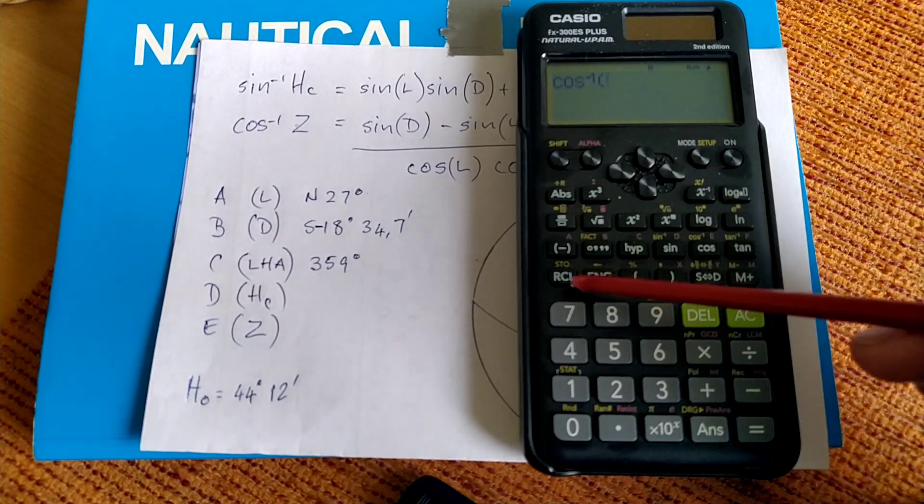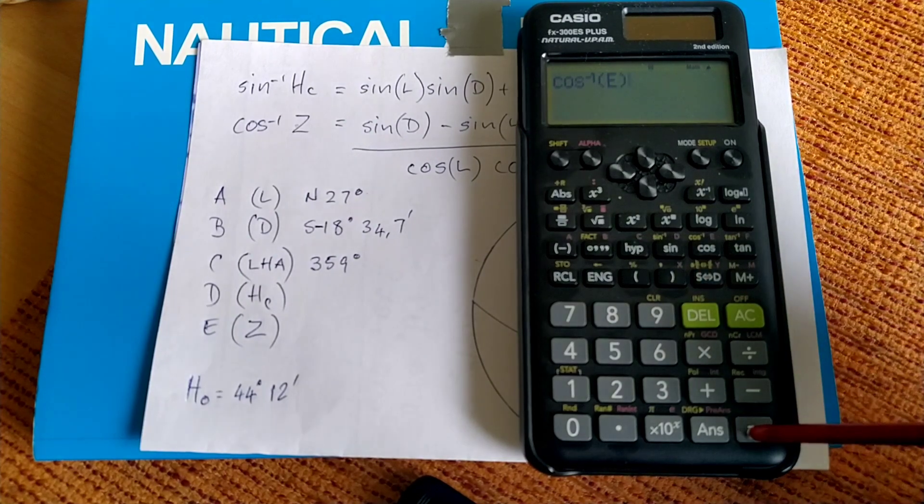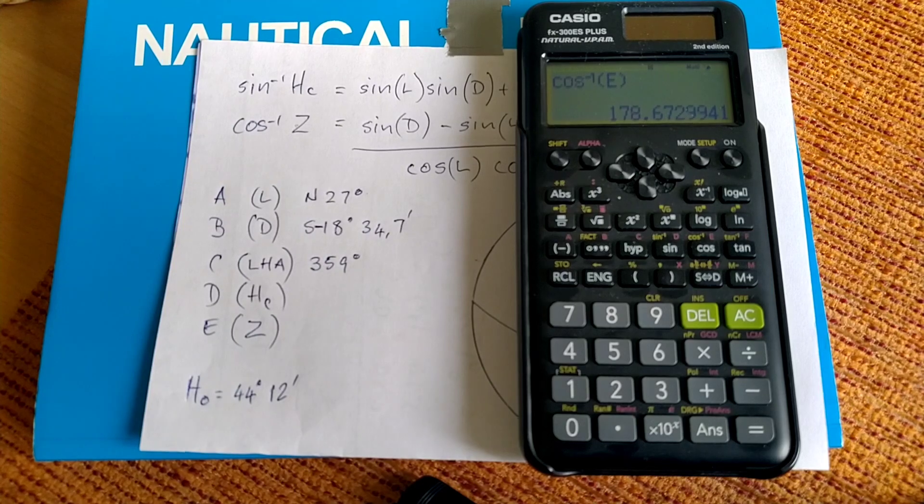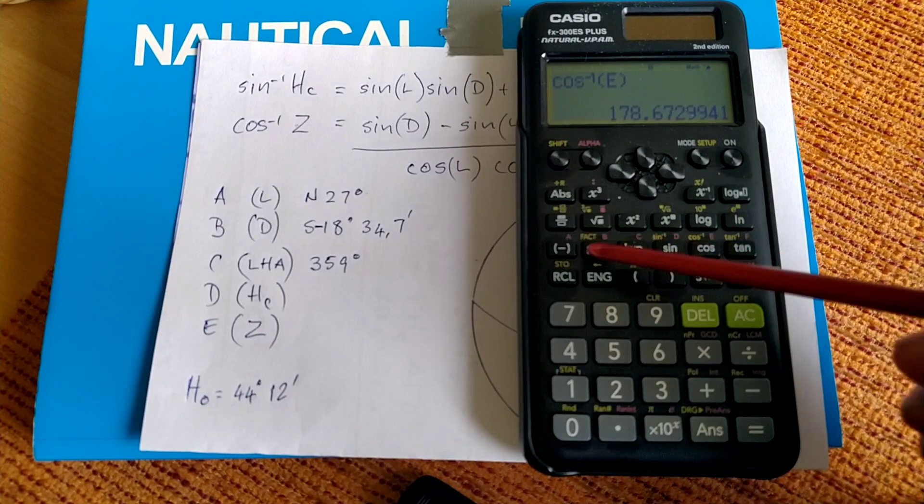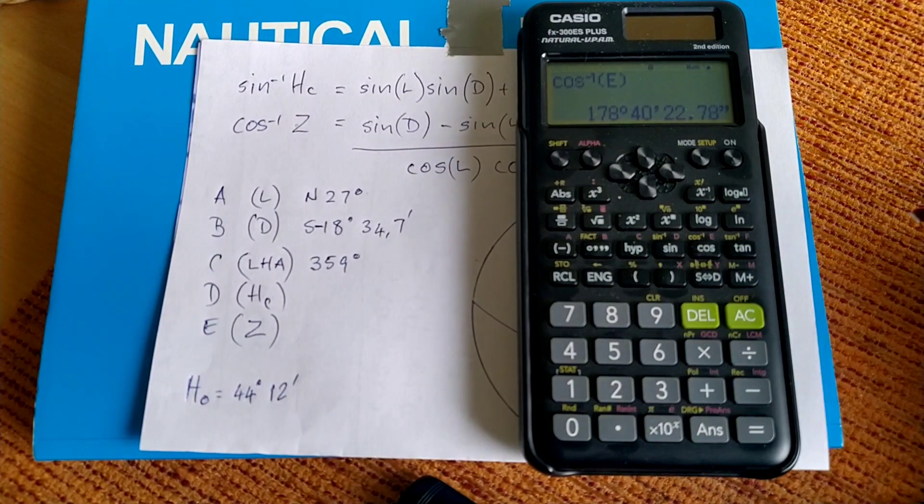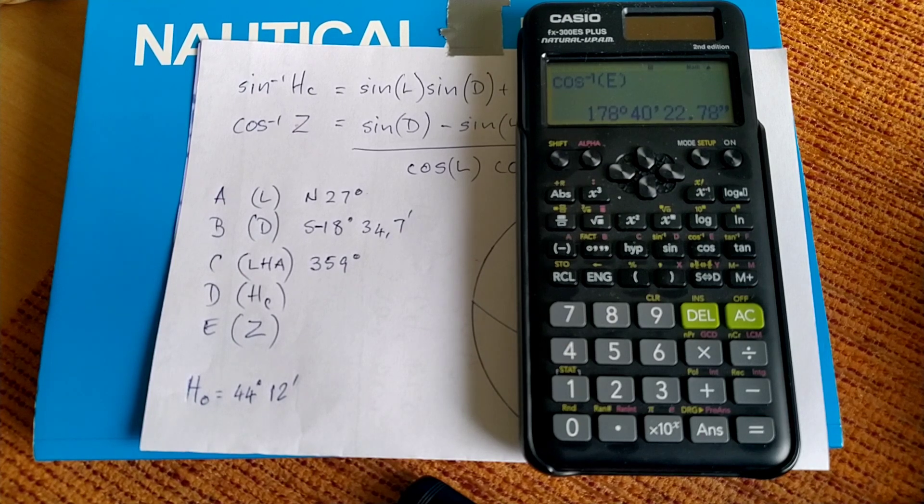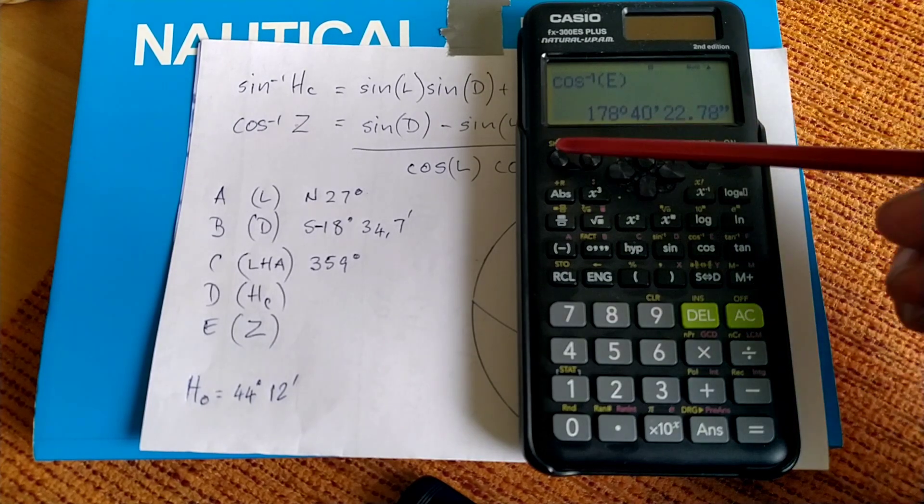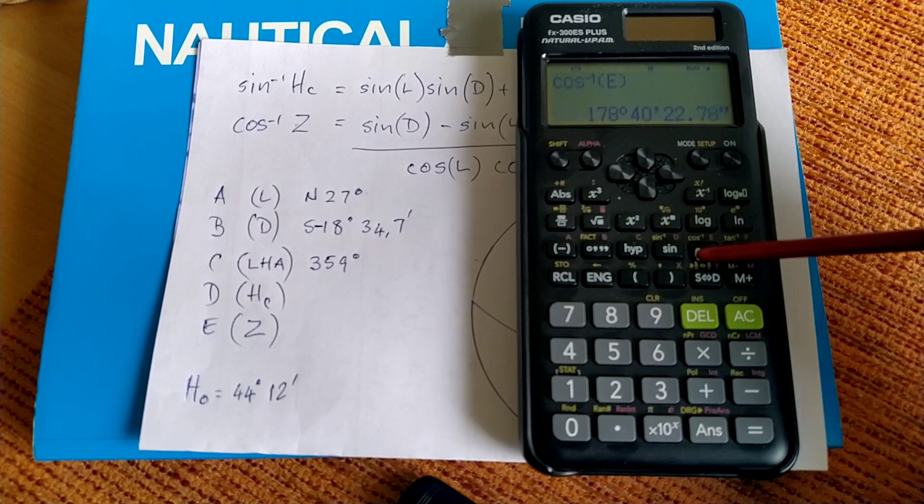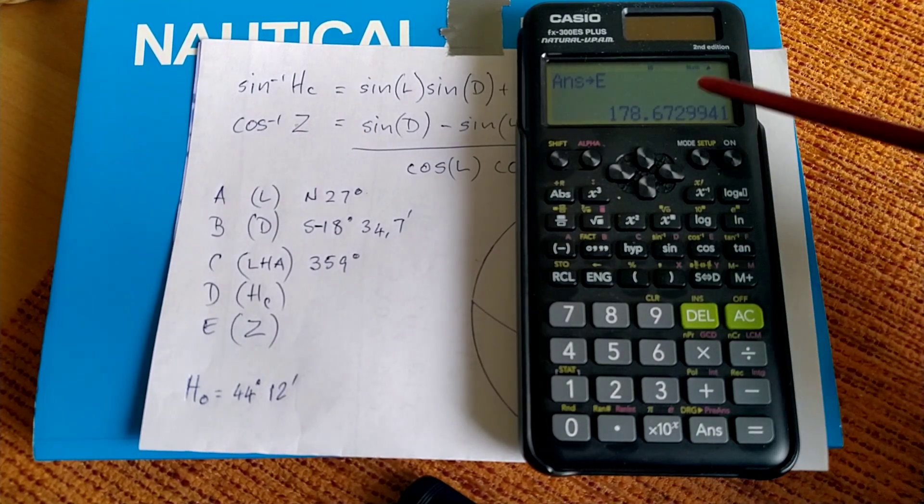Now we want the angle. Shift, inverse cosine, recall, E, brackets. And there we go. That's our azimuth angle, Z, of 178.67 degrees. We hit the sexagesimal button again because we want it in degrees in minutes. And let's just take a look at that. Brilliant. There we go. We have an angle of 178 degrees and 40 minutes and 22 seconds. So we could say then that that's about 178 degrees and 40.3 minutes. So what we're going to do now is then assign that angle to E. Shift, store, E. And then we have it. We've assigned the answer to variable E.